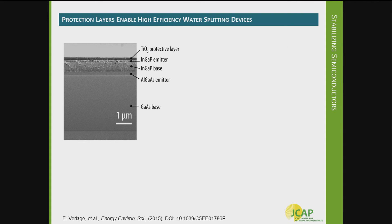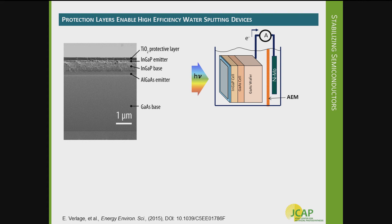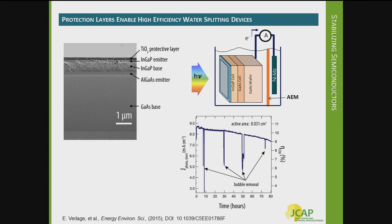An important aspect is that these protection layers have enabled the creation of integrated devices with high efficiency. This SEM image shows a dual-junction gallium arsenide–indium gallium phosphide multi-junction absorber protected by a TiO2 protection layer. In a two-electrode configuration with a nickel molybdenum counter electrode where hydrogen evolution is happening, we were able to demonstrate over 10% solar-to-hydrogen efficiency for 40 hours — which was, at the time, a record. This was enabled by the fundamental science that went into understanding and developing these protection layers.